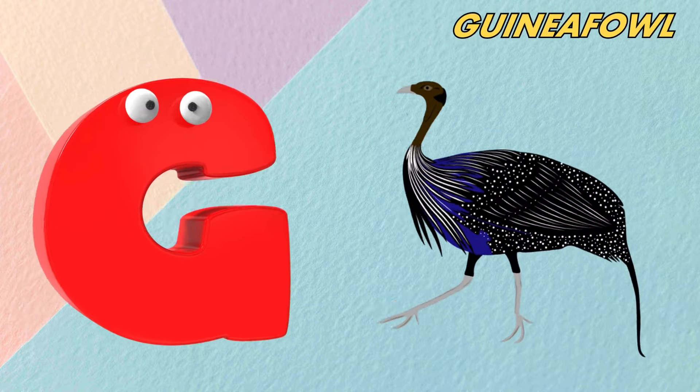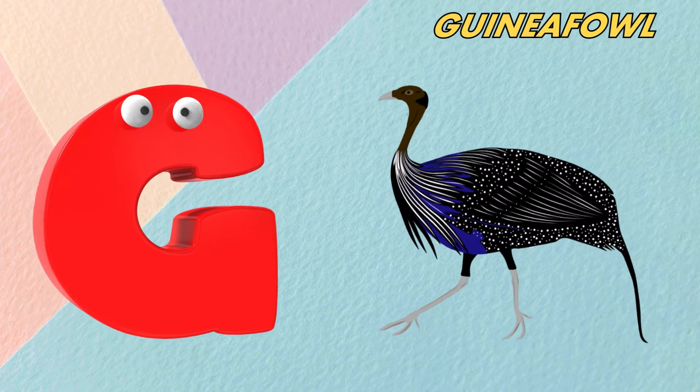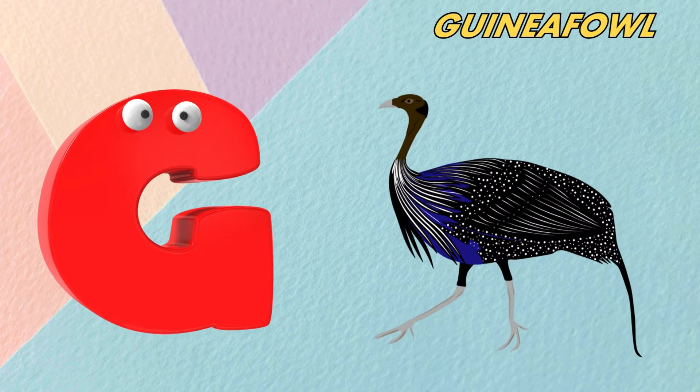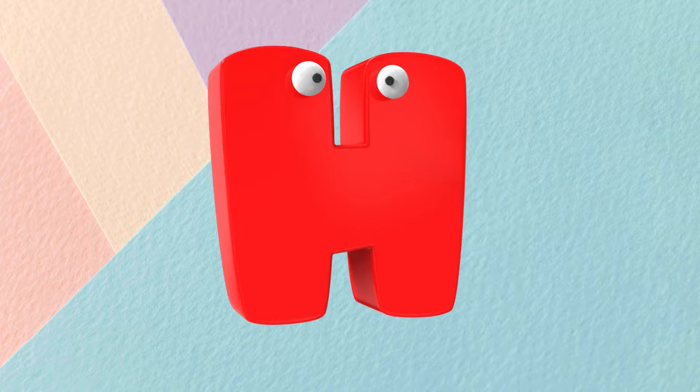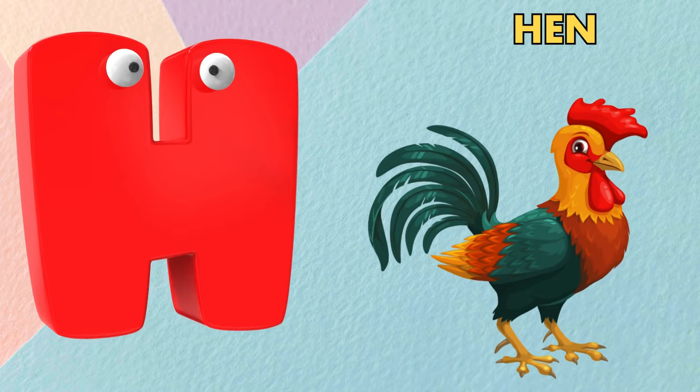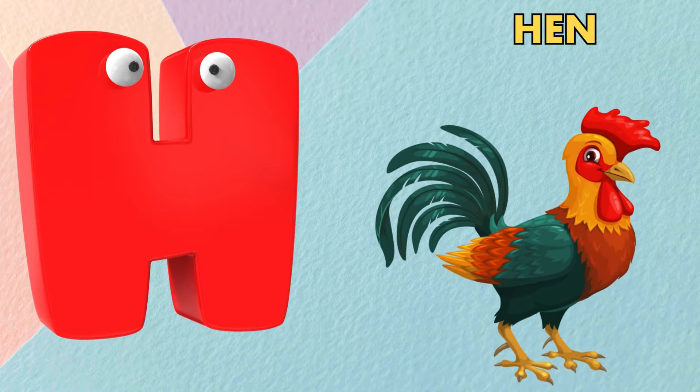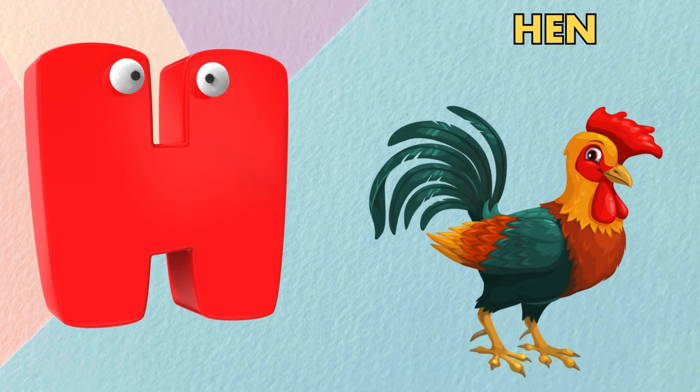G is for guinea fowl. G, guinea fowl. H is for hen. Ha, hen.